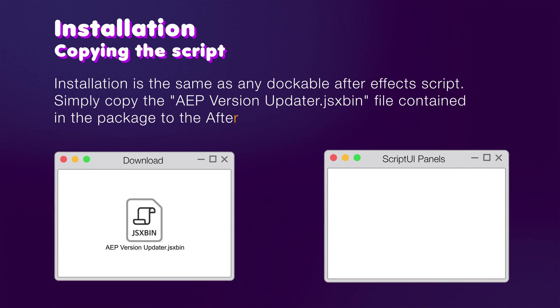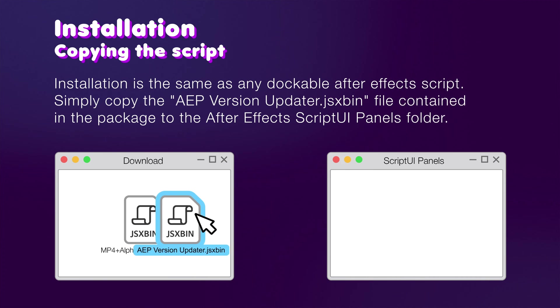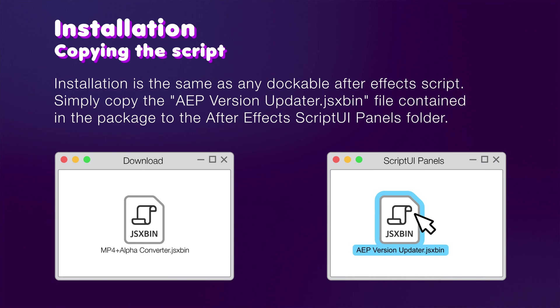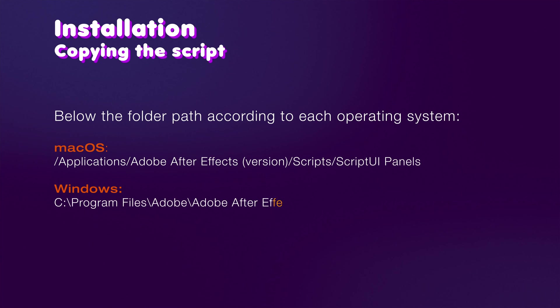Installation is the same as any dockable After Effects script. Simply copy the .jexpan file contained in the package to the After Effects Script UI Panels folder. Below is the folder path according to each operating system.